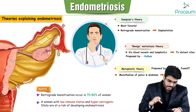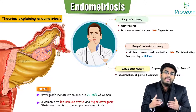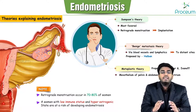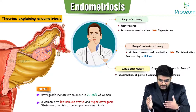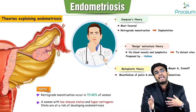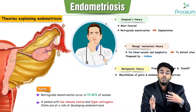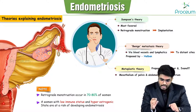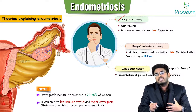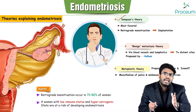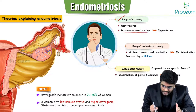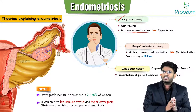Why does endometriosis happen? We don't know exactly, but there are certain theories explaining why endometrium grows outside the uterine cavity. The widely accepted theory is Sampson's theory, which states there is a phenomenon called retrograde menstruation.